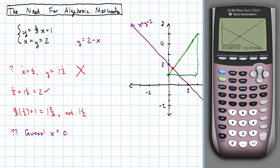So, 0.428571, all repeating. My y is 1.571428, all repeating.